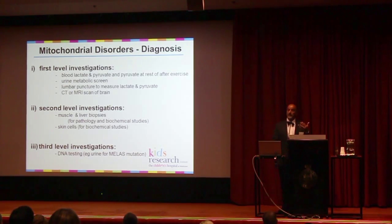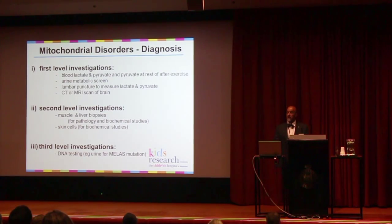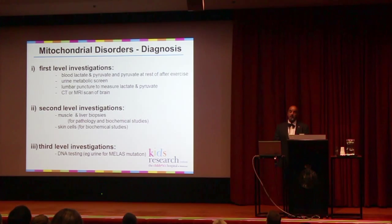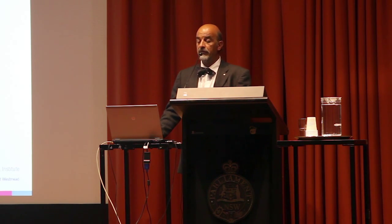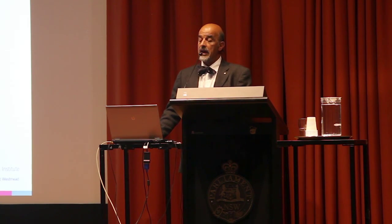Diagnosis of mitochondrial disease begins with clinical suspicion, but traditionally we then move on to a number of investigations. First-line investigations are screening tests in blood and urine; sometimes a lumbar puncture is needed. Imaging of the brain can be helpful, as we can see characteristic features on MRI or CT scans. In the pediatric realm, establishing a mitochondrial diagnosis has traditionally required more invasive testing — liver and muscle biopsies done under general anaesthetic, which carry their own risks. Those tissue samples are examined microscopically and analyzed for their ability to make ATP.